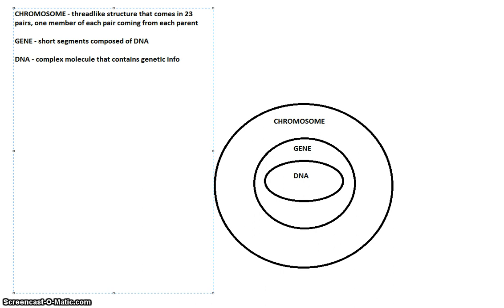So DNA joined together to create genes, and genes form into chromosomes. So that is the order that they go in.